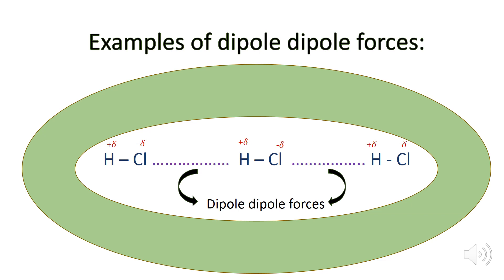Let's take an example of dipole-dipole forces with hydrogen chloride molecules. Remember that the dipole-dipole forces are the intermolecular force of attraction, meaning these forces are between two different molecules. We have three hydrogen chloride molecules where hydrogen has a partial positive charge due to its lower electronegativity, and chlorine has a partial negative charge due to its greater electronegativity. As a result, partial positive and partial negative charges are produced, and the force of attraction between the partial negative and partial positive charges of different molecules is called the dipole-dipole force.